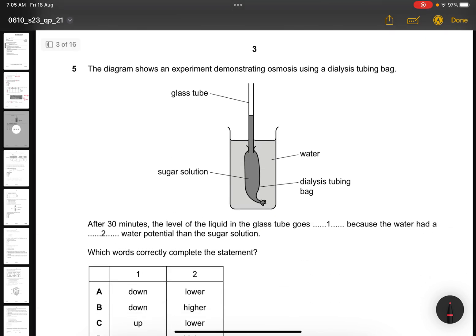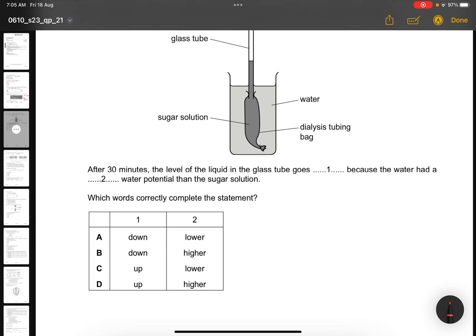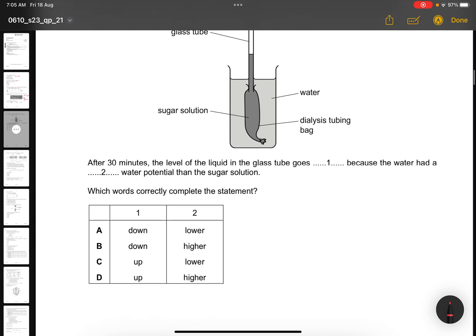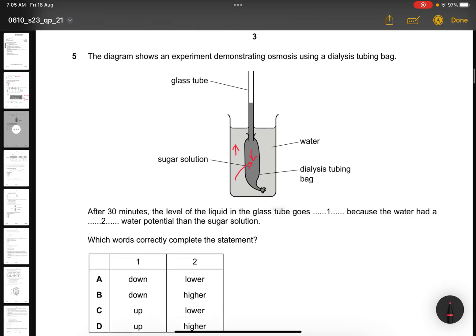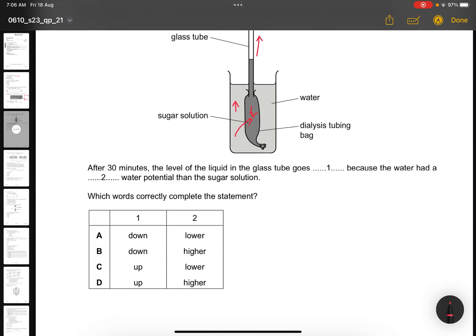Question 5. The diagram shows an experiment demonstrating osmosis using a dialysis tubing bag. After 30 minutes, the level of the liquid goes up because the water had a higher water potential than the sugar solution. Sugar solution is inside, that is the lower water potential, and water has a higher water potential. So it goes in, therefore making the glass tube increase. Therefore, the water has a higher water potential than the sugar solution. The answer is D.